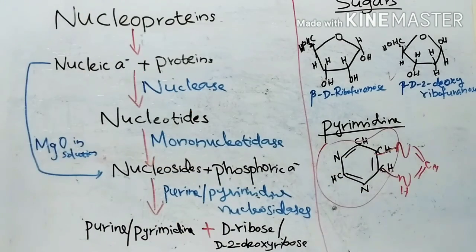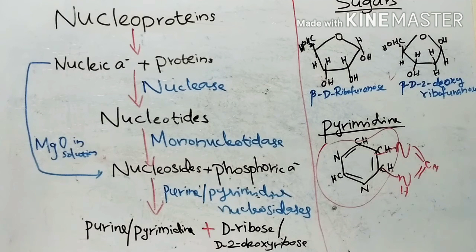This is the structure of purine ring. Adenine and guanine are the two principal purines found in both DNA and RNA. Adenine is chemically 6-amino purine. Guanine chemically 2-amino, 6-oxy-purine.